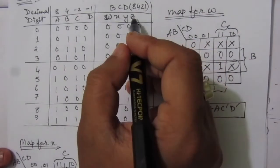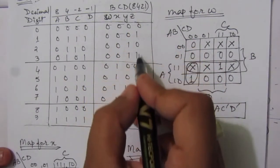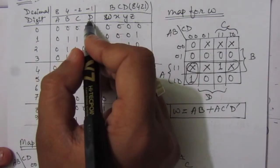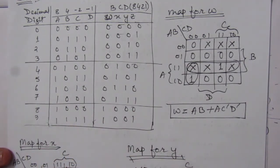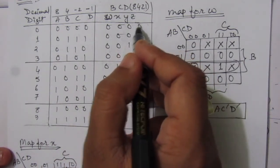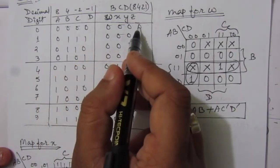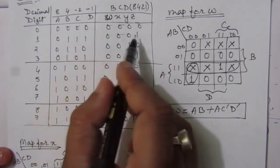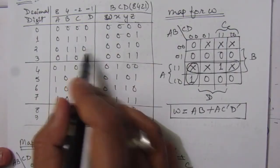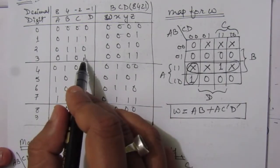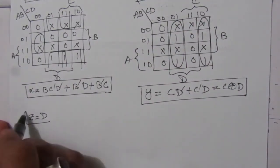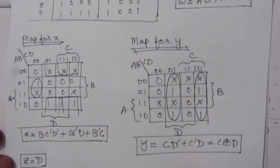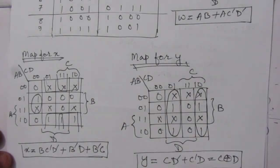From the table, we can observe that the Z values are 0,1,0,1,0,1,0,1,0,1 and the D values are also 0,1,0,1,0,1,0,1,0,1. So we can directly say that Z equals D. For all values, Z equals D, so we write Z = D.